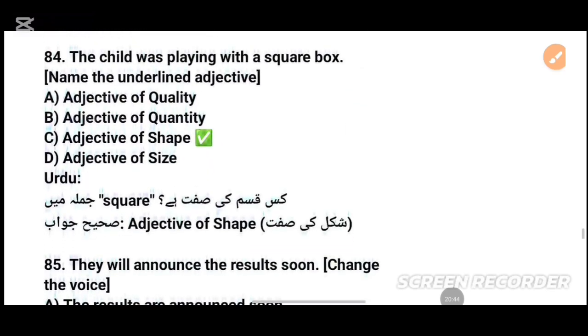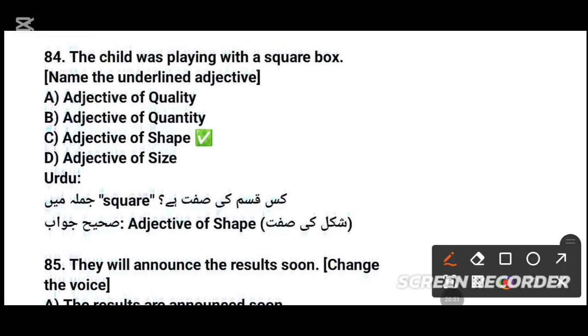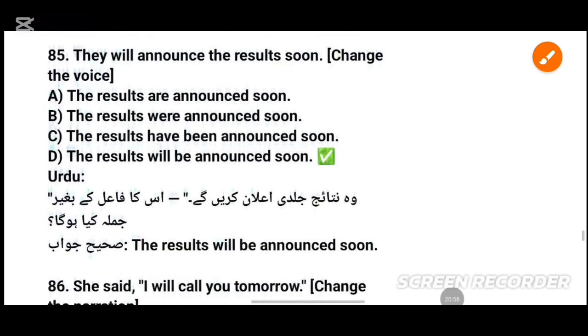MCQs number 84: 'The child was playing with a square box' — underline the adjective. The adjective is 'square' — tick that option. MCQs number 85: 'They will announce the results soon' — change the voice.